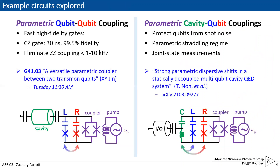To highlight this platform I'll feature two experiments our group has pursued. One is a parametric qubit-qubit coupling experiment where we have shown fast high-fidelity gates and the ability to eliminate the ZZ coupling. To learn more about this you can see Jin's talk tomorrow morning.